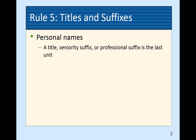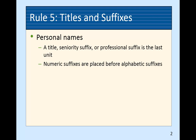Professional suffixes are the last unit. If they're numerical, they're placed in order before alphabetic — meaning 1, 2, 3. Numerical means one, two, three — first, second, third — not junior, senior. Junior and senior would still be in alphabetical order, but the 1, 2, 3s come in front of the junior/seniors in our list.